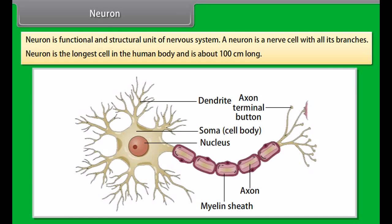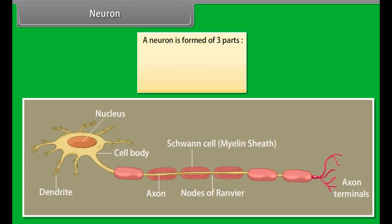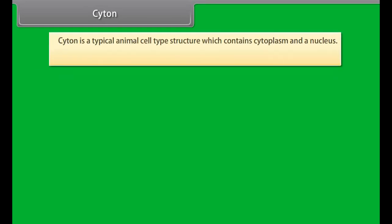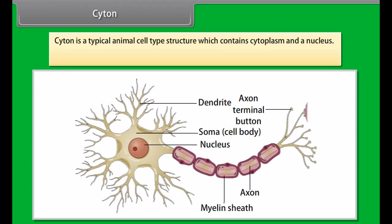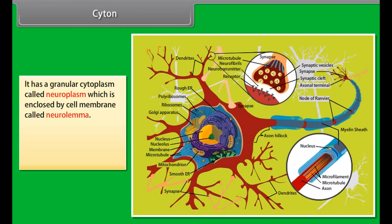The units which make up the nervous system are called nerve cells or neurons. A neuron is the functional and structural unit of the nervous system — a nerve cell with all its branches. The neuron is the longest cell in the human body, about 100 cm long. A neuron is formed of three parts: cytone, dendrites, and axon.